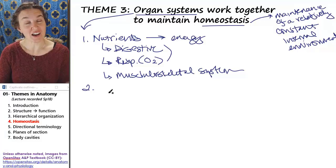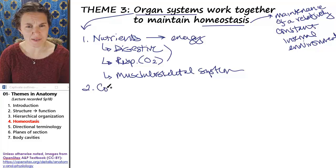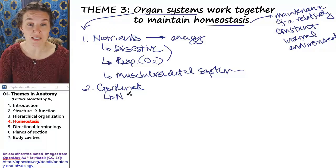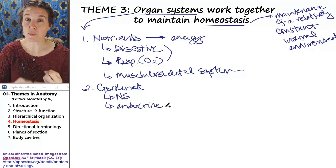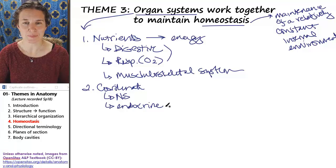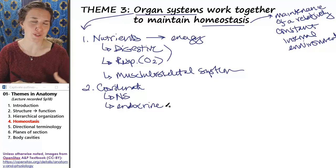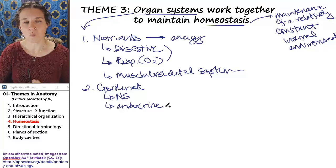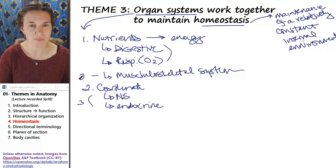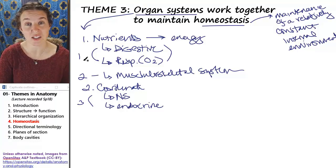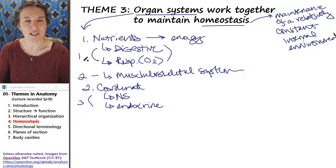Another big task of body systems is to coordinate. The major coordinating efforts are by the nervous system and the endocrine system. The nervous system is the brain, spinal cord, and neurons. The endocrine system involves the production of hormones in places like the pituitary gland; the hypothalamus regulates that, and we also have adrenal glands and the pancreas has endocrine function. We actually spend an entire session — six lectures — on the nervous and endocrine systems because they are these coordinating systems. That's exam three.